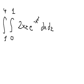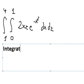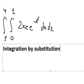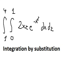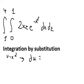Next we need to use integration by substitution. So I will let u equal to x squared. If we take the first derivative we get du, and we need to solve for dx.